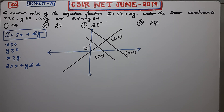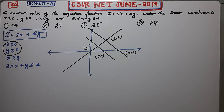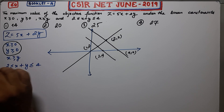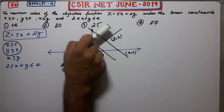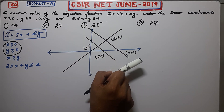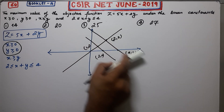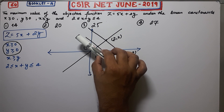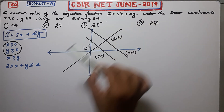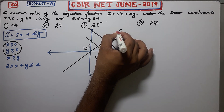Now I have to shade the feasible region. From the constraints X > 0 and Y > 0, the region is in the first quadrant. The line Y equals X divides the plane — the area with Y greater than X is above the line, and the area with X greater than Y is below. From X > Y, shade below this line. From X plus Y greater than or equal to 2, shade the region above that line. From X plus Y less than or equal to 4, shade the region below that line.